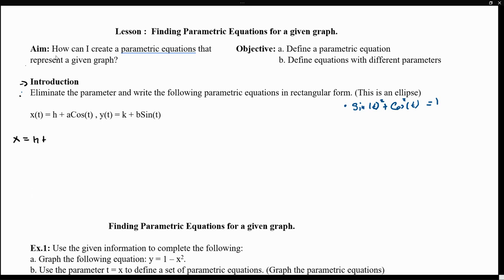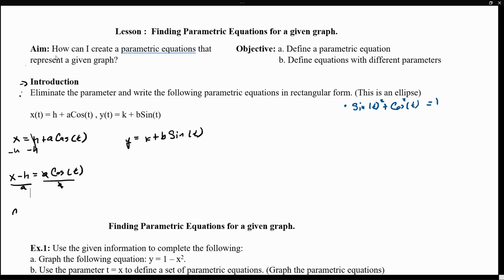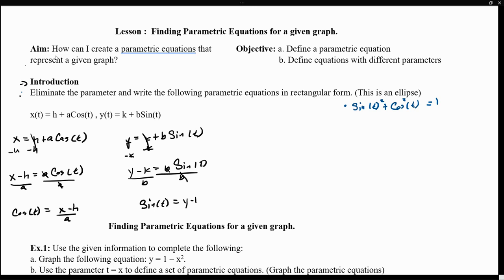Let me rewrite my x trigonometric function and write down my y function in terms of a trigonometric expression. By looking at x, let me solve for cosine. If I take away h, this becomes x minus h equals a cosine of t, so cosine of t is x minus h over a. Now let's solve for sine: y minus k equals b sine of t divided by b, so sine of t is equivalent to y minus k over b.